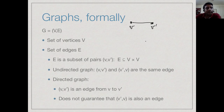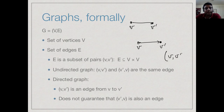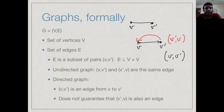On the other hand, in a directed graph, we associate a direction with an edge. We could draw an edge from V to V prime, written in our edge set as a pair (V, V prime), saying the start vertex is V and the end is V prime. This is not the same as an edge from V prime to V, written as (V prime, V). In directed graphs, the order of the vertices when we mention the edge matters.